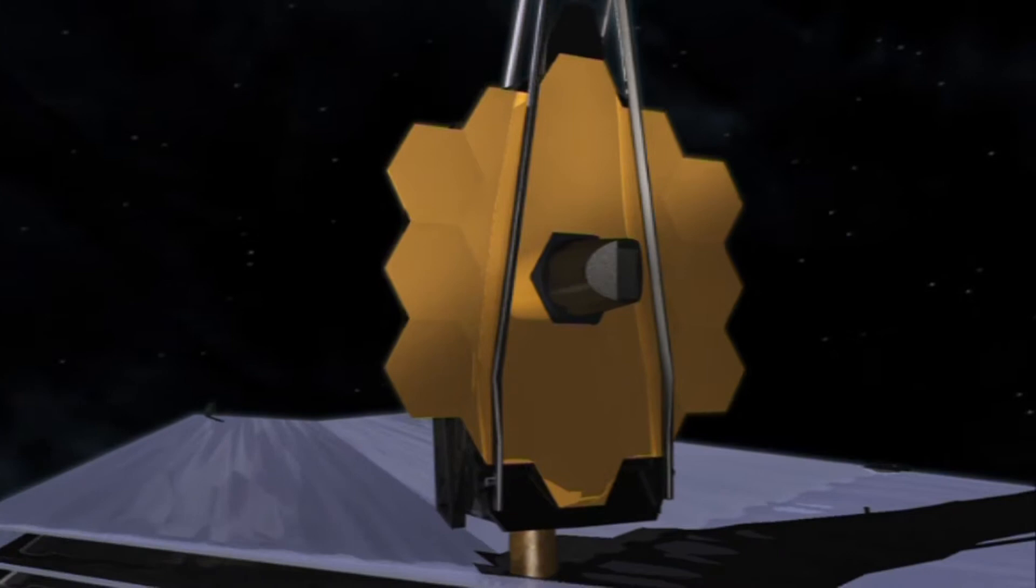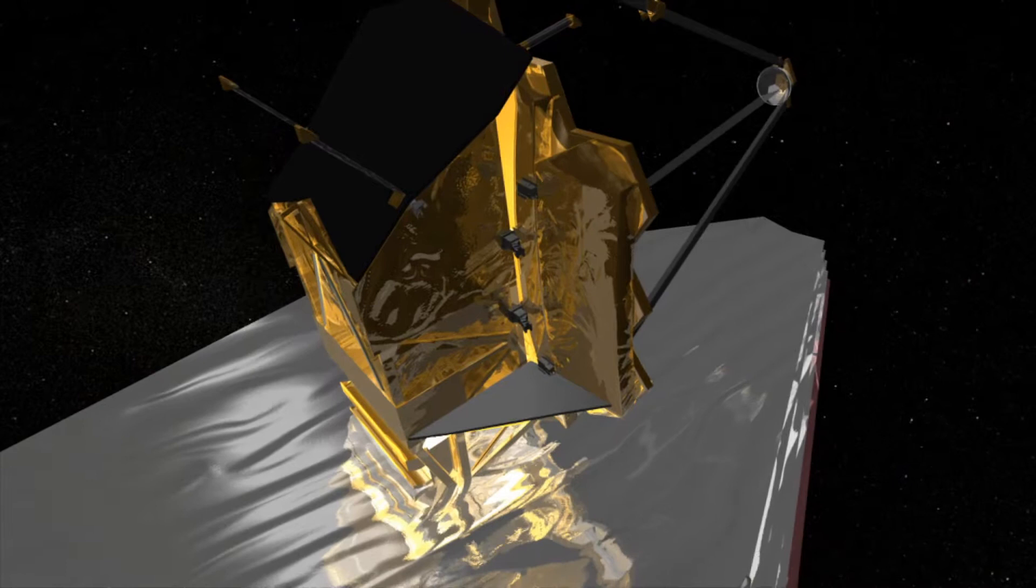A large sunshade keeps the optics and the low temperature instruments in permanent shadow, allowing them to operate near a whopping minus 233 degrees Celsius.